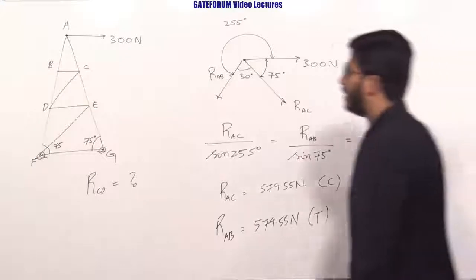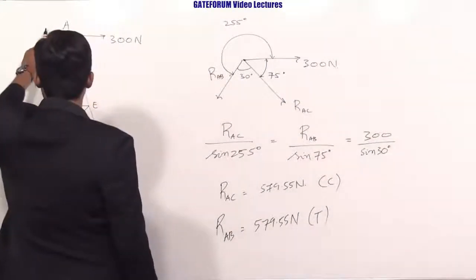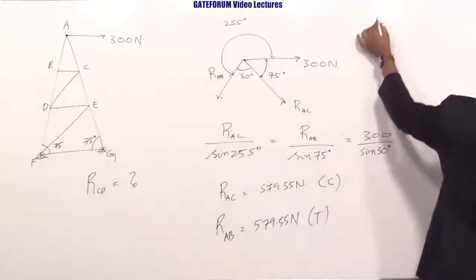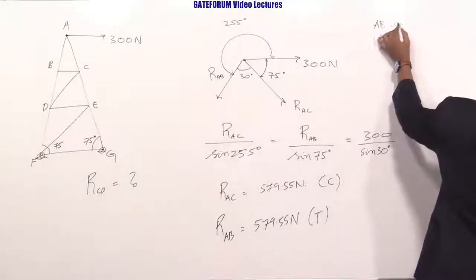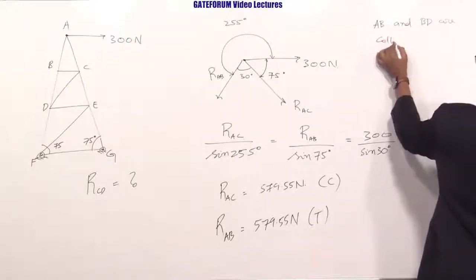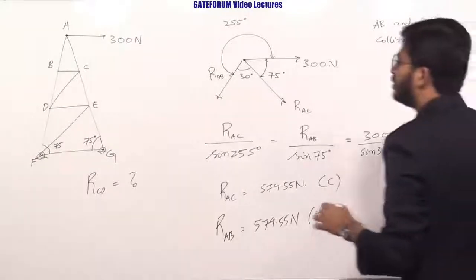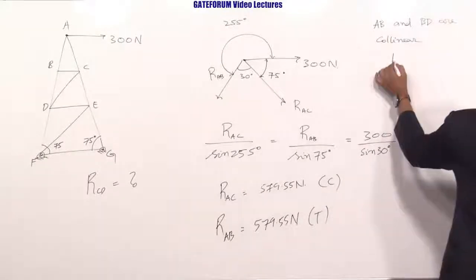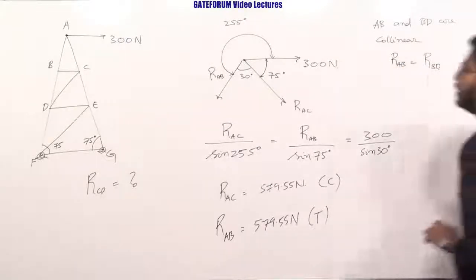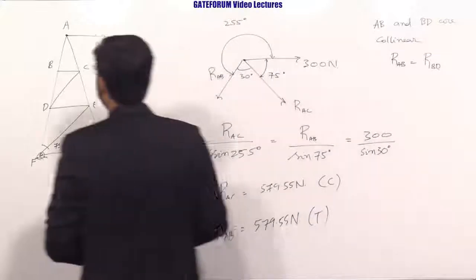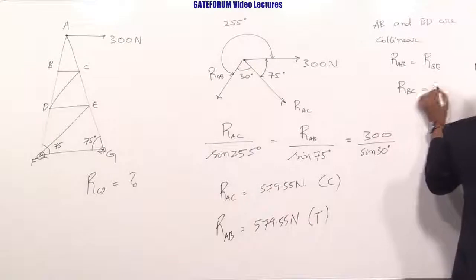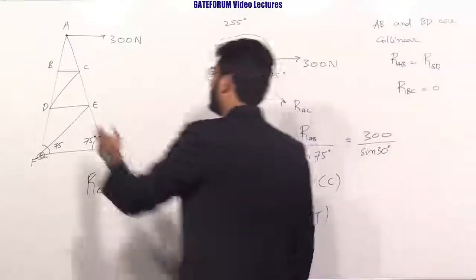Moving to joint B: members AB and BD are collinear, so RAB equals RBD. Because two collinear members meet at joint B with no external load, RBC equals zero — BC is a zero-force member.